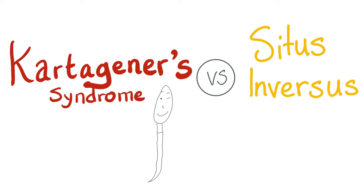Hey guys, it's Medicosis Perfectionalis one more time. We continue our playlist called Pulmonology or Pulmonary Diseases. In the previous video, we talked about Kartagener Syndrome, also known as Immotile Cilia Syndrome, also known as Primary Ciliary Dyskinesia.